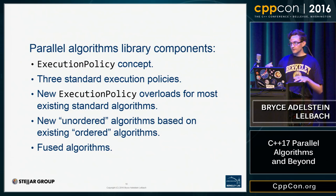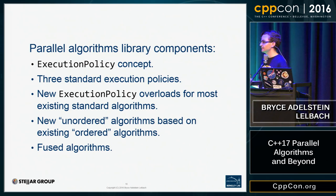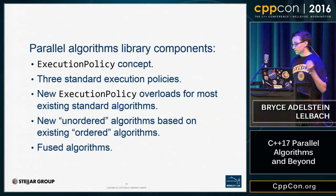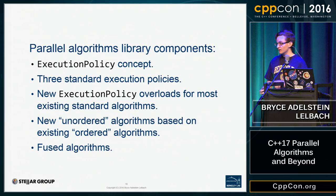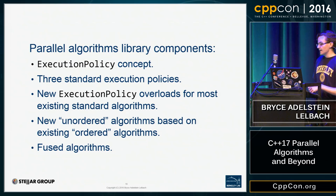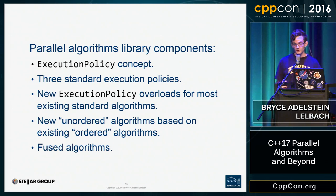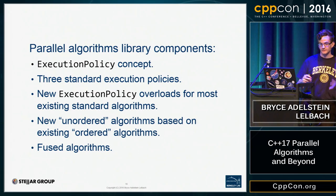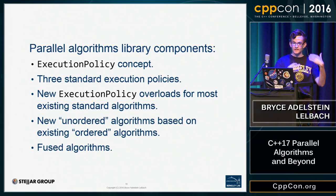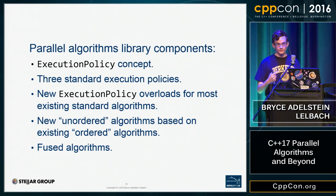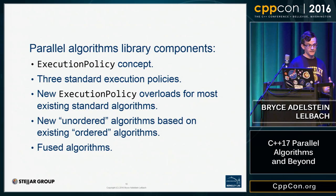There are five main components to the parallel algorithms library. First, there's the concept of an execution policy. Then there are three standard types that implement that concept. Then there are the algorithms themselves — new overloads of existing algorithms that take an execution policy as their first parameter. There are also new unordered algorithms based on existing ordered algorithms, where the wording of the serial version would prohibit parallelization, so a new version with relaxed ordering guarantees is added. Finally, there are fused algorithms — combinations of other algorithms that create more efficient implementations.